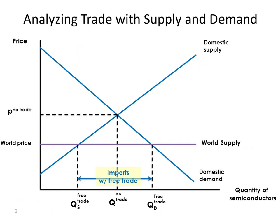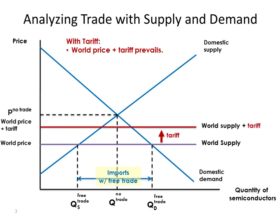Now let's do the same diagram but with a tax, or a tariff. Here is the quantity demanded with free trade, here is the quantity supplied with free trade, and the difference between them is imports with free trade. A tariff is simply a tax on imports, and what it does is raise the world price by the amount of the tariff.